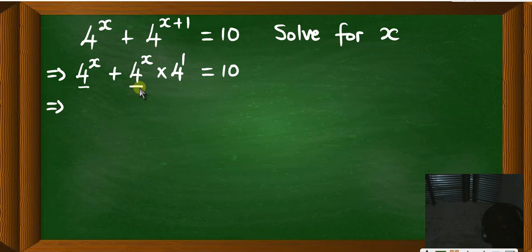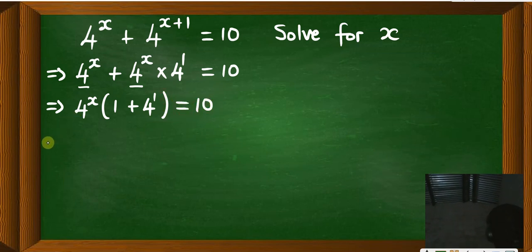So you have 4 to the power x here. Once you factor out 4 to the power x you remain with 1, then you put plus here, then here once you factor out 4 to the power x, then you close brackets, then equals 10 like that.